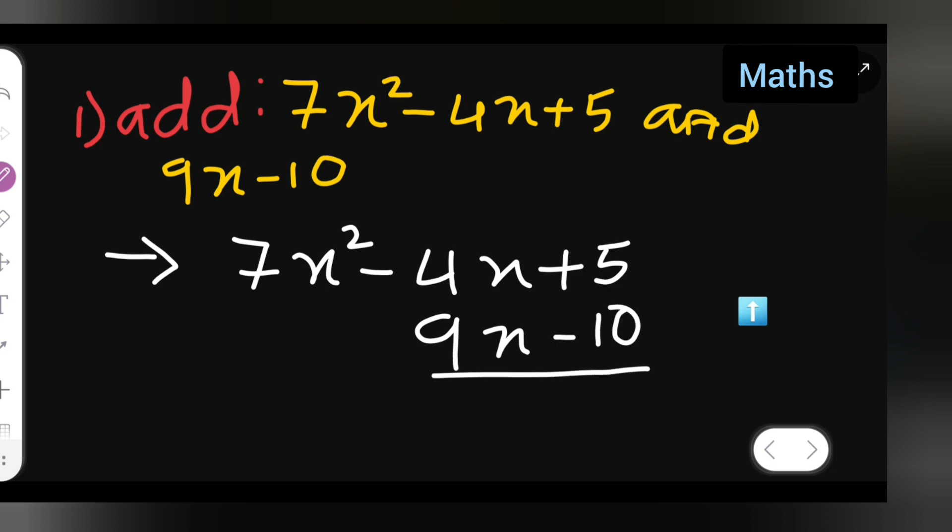5 minus 10 will give you -5. Take the sign of the bigger number.